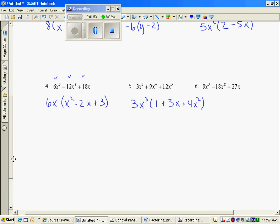And then the last problem looks like they all share a 9x. Multiplying to make sure I get each term back, that must be an x squared minus 2x plus a 3. Again, when you redistribute, you have to make sure that you get all of those 3 terms.